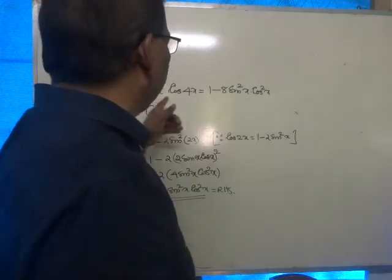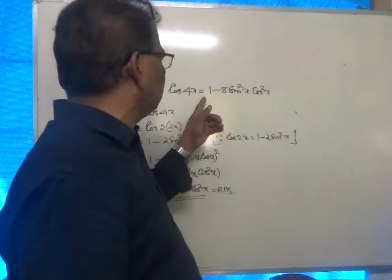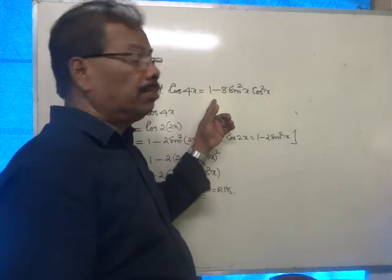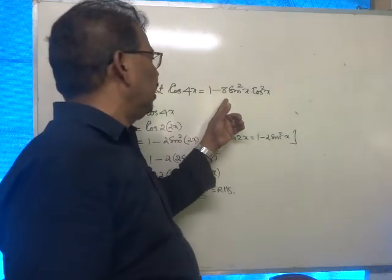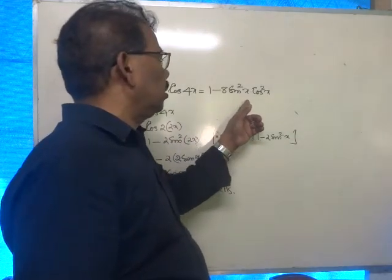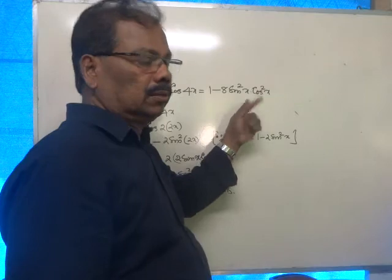Question 24. Prove that cos 4x equals 1 minus 8 sin squared x cos squared x.